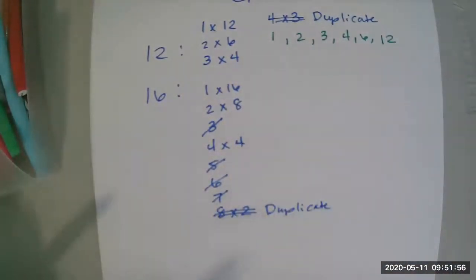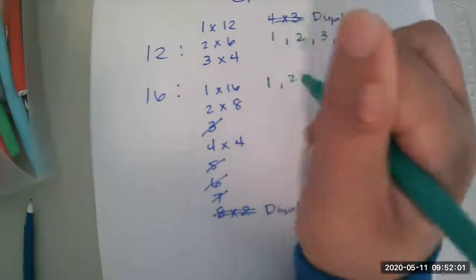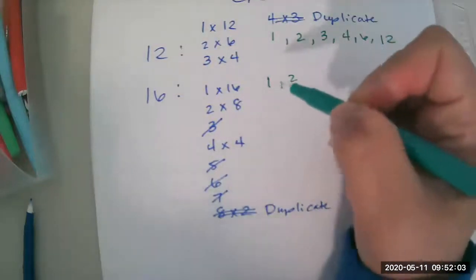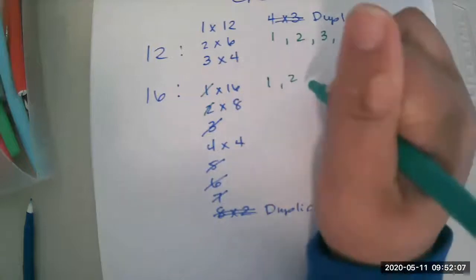So the factors of 16, I'm going to go ahead and list them in order. 1, 2, and if you want, you can cross them out as you list them. So I just did 1, I just did 2. No 3. There's a 4.